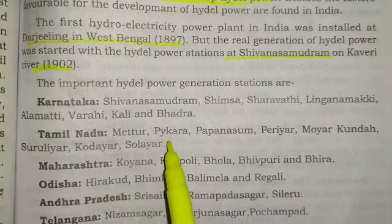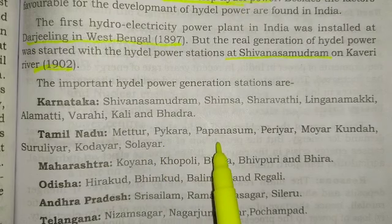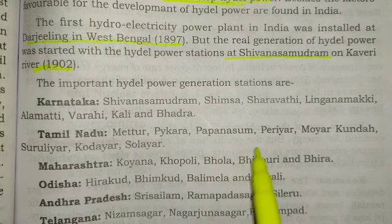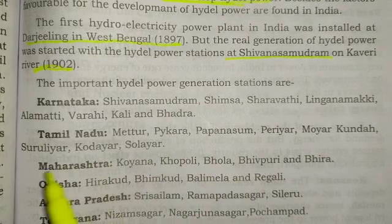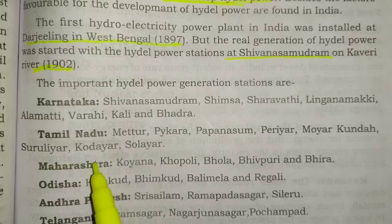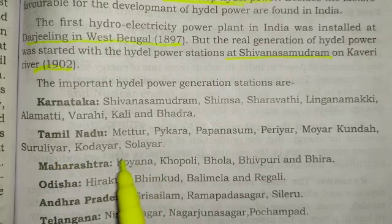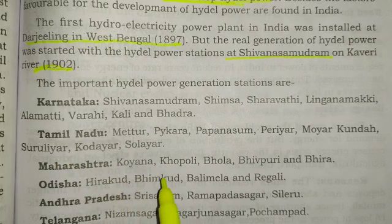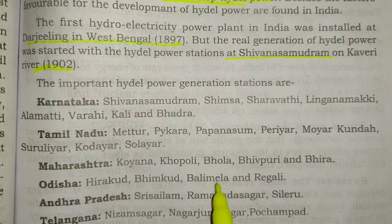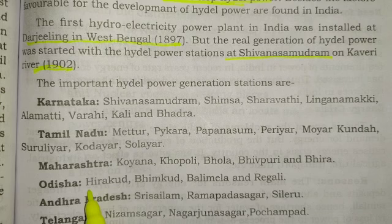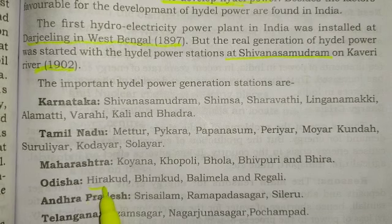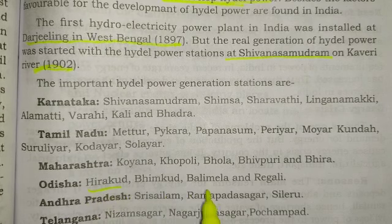In Tamil Nadu: Mettur, Paikara, Mojarkhunda, Suruliyar, Kodiyar, and Solaiyar. In Maharashtra: Koyna, Bhira, Vaitarna, and Bhivpuri. In Odisha: Hirakud, Balimela, and Rengali.